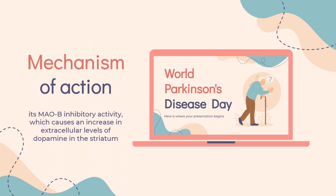Mechanism of Action. The precise mechanism of action of rasagiline is unknown. One mechanism is believed to be related to its MAO-B inhibitory activity, which causes an increase in extracellular levels of dopamine in the striatum. The elevated dopamine level and subsequent increased dopaminergic activity are likely to mediate rasagiline's beneficial effects seen in models of dopaminergic motor dysfunction.